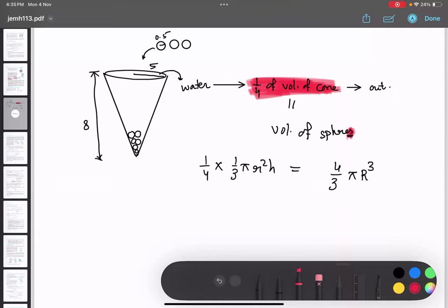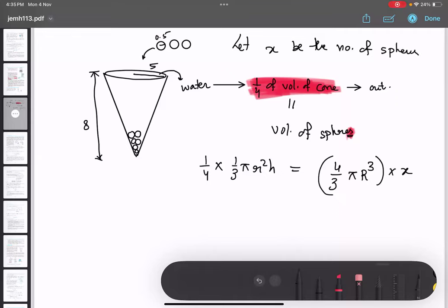Do we know how many spheres did we drop? No. So how many? X. So I can multiply this thing by X. Got it? And we can define it as, let X be the number of spheres. Understood?